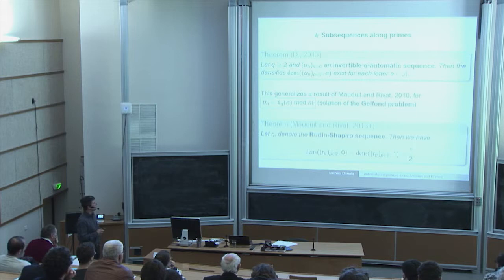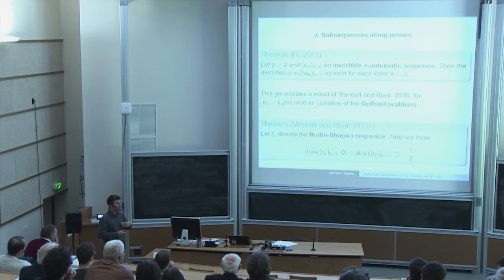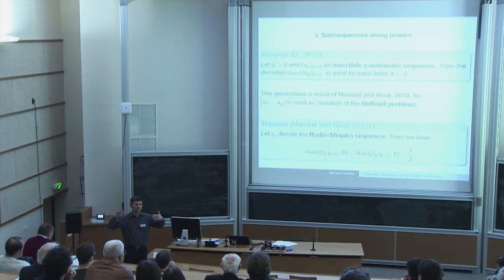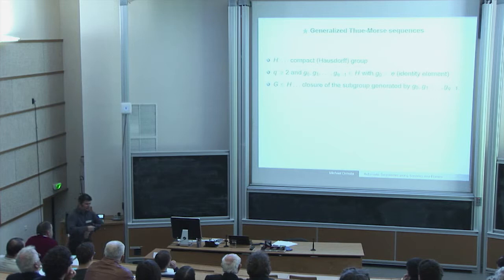What is about general automatic sequences? What is not known and maybe out of reach is to prove something like a normality result for the subsequence of primes.